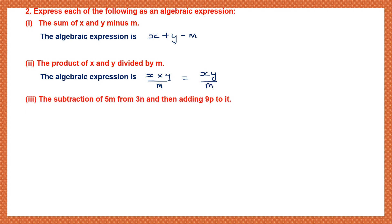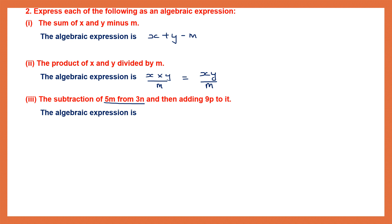Question 3: The subtraction of 5M from 3N and then adding 9P to it. The algebraic expression is 3N − 5M + 9P. We write 3N first, subtract 5M, then add 9P.